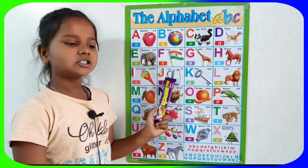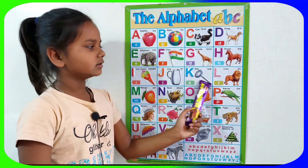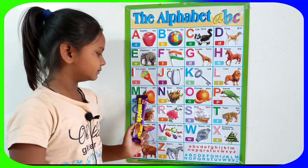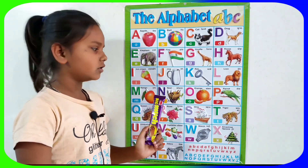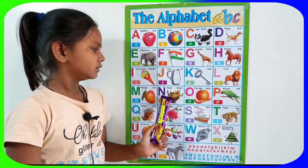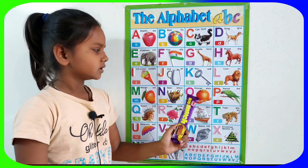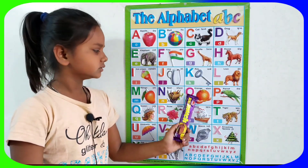J for jog, K for key, L for lion, M for mango, N for nest, O for orange.